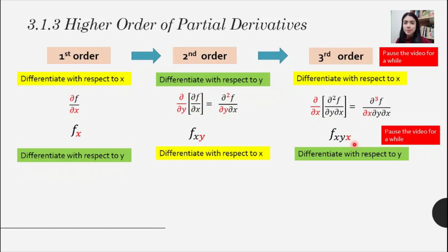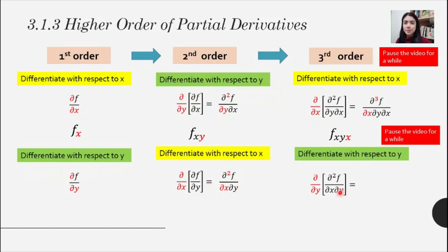For the next case, differentiate with respect to y for the first order: ∂f/∂y. For the second order, differentiate with respect to x: take the first-order answer, apply ∂/∂x, and rewrite as ∂²f/∂x∂y. For the third order, differentiate with respect to y: apply ∂/∂y to get ∂³f/∂y∂x∂y. Do not group ∂y·∂y together — follow the sequence. Subscript notation: fy, fyx, and for the third order, fyxy.